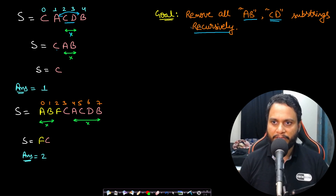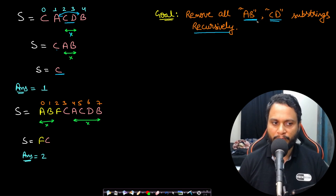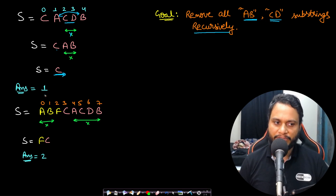When we remove this CD, the resulting string becomes CAB because A and B get concatenated. Now AB is also one of the substrings which needs to be removed, so we remove AB as well and our final string is C. In this string there is no such substring left to remove, so the length is our answer, which is 1.